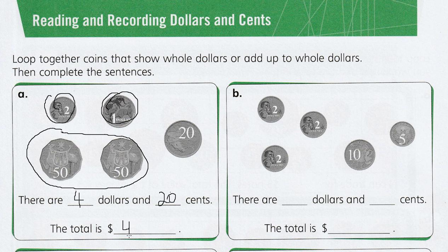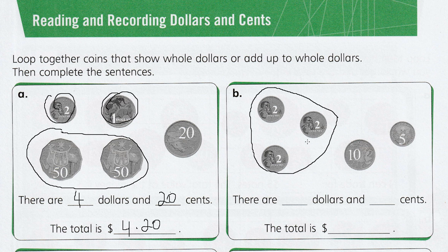So the total is $4.20. And this one — we loop together the whole dollars, so we'll loop those together like that. That's $6: 2, 4, 6, and 15 cents.